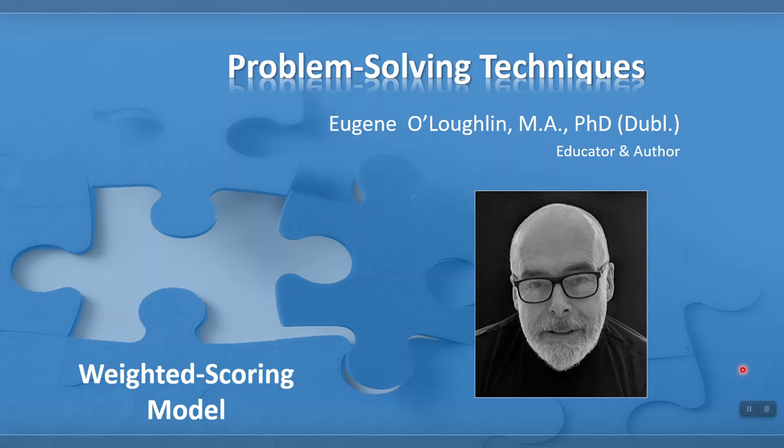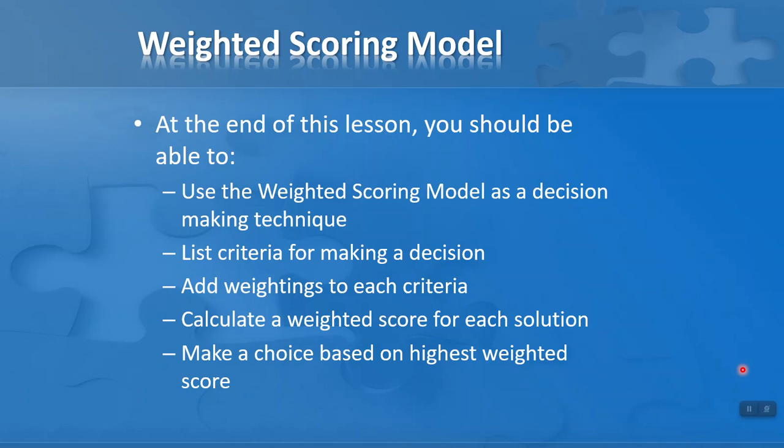Hi, I'm Dr. Eugene O'Loughlin and welcome to my series of lessons on problem-solving techniques. In this lesson, we're going to take a look at the weighted scoring model. At the end of this lesson, you should be able to use the weighted scoring model as a decision-making technique, list criteria for making a decision, add weightings to each criteria, calculate the weighted score for each solution, and make a choice based on the highest weighted score.